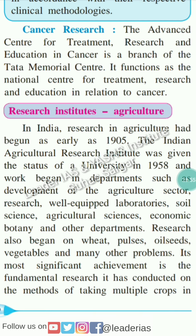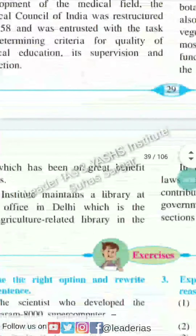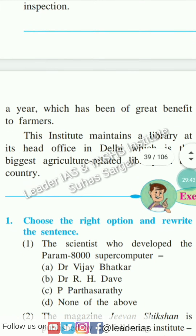Research Institutes in Agriculture: In India, research in agriculture had begun as early as 1905. The Indian Agricultural Research Institute was given the status of a university in 1958 and work began in departments such as Development of Agricultural Sectors, Research, Well-equipped Laboratories, Soil Sciences, Agricultural Sciences, Economic Botany, and other departments. Research also began on wheat, pulses, oilseeds, vegetables, and many other problems. Its most significant achievement is the fundamental research conducted on methods of taking multiple crops in a year, which has been of great benefit to farmers. The institute maintains a library at its head office in Delhi, which is the biggest agricultural-related library in the country.